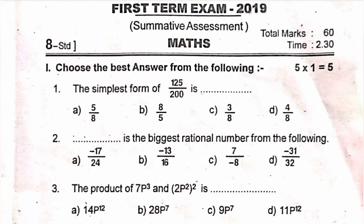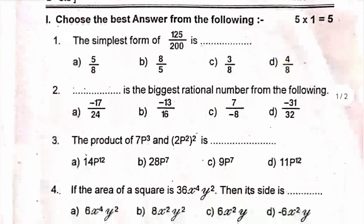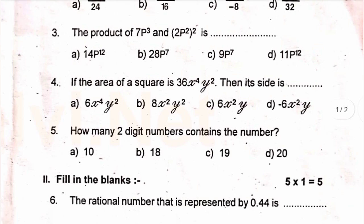Rule number one, choose the best answer from the following, five marks. First one, the simplest form of 125 by 200 is dash. Second, dash is the biggest rational number from the following. The product of 7p cube and 2p square the whole square is dash. Fourth, if the area of a square is 36x power 4y square then its side is dash. Then fifth, how many two digit numbers contain the number.